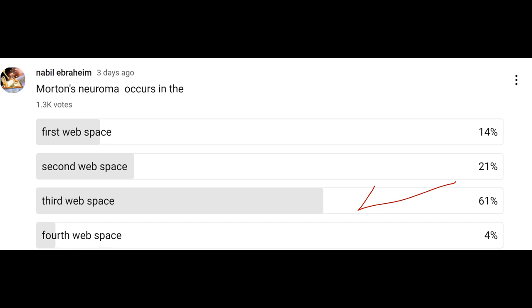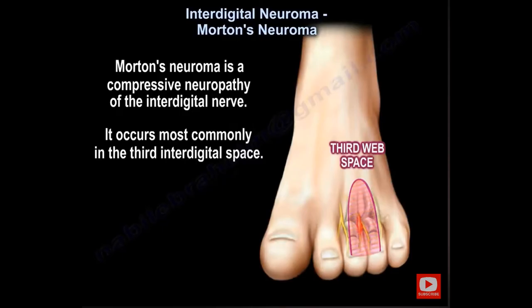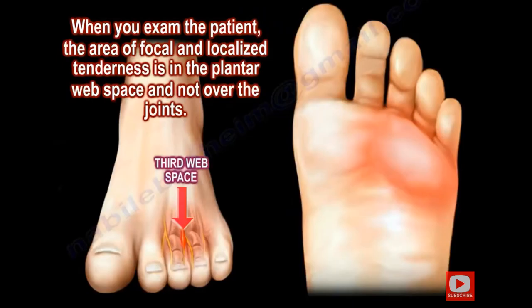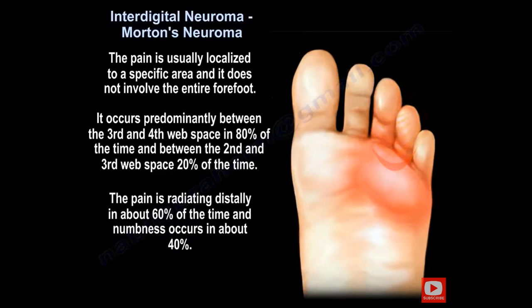Morton's neuroma occurs predominantly in the third web space. It is a compression of the interdigital nerve. When you examine the patient, the area of focal and localized tenderness is in the plantar web space, not over the joints. The pain is usually localized to a specific area and does not involve the entire forefoot. Pain radiates distally in about 60% of cases, and numbness occurs in about 40% of cases.